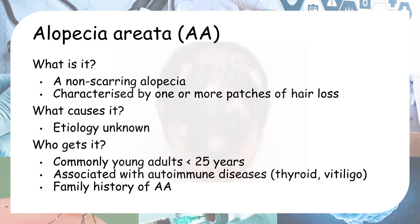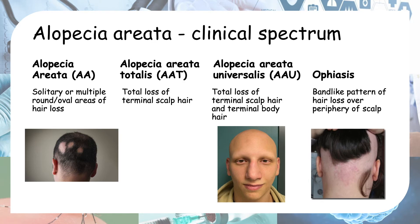Next we'll talk about alopecia areata. It is a non-scarring alopecia characterized by one or more patches of hair loss. It is of unknown etiology, commonly presents in young adults, and is associated with autoimmune disease and a family history. There are four types: the most typical is solitary or multiple round or oval areas of hair loss.